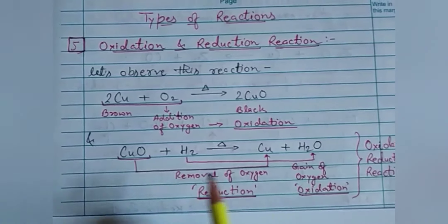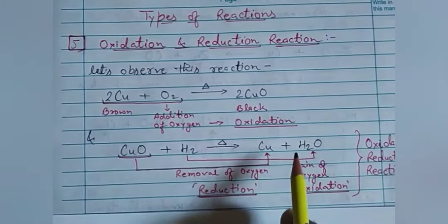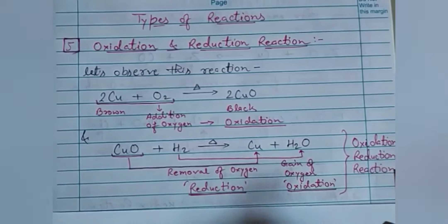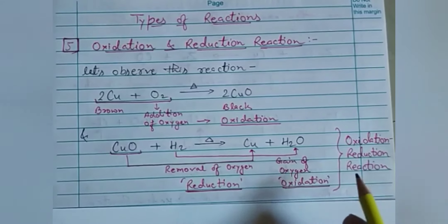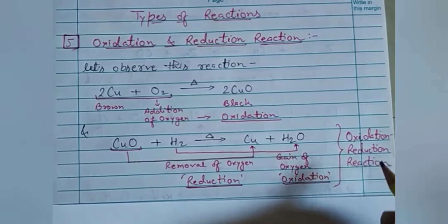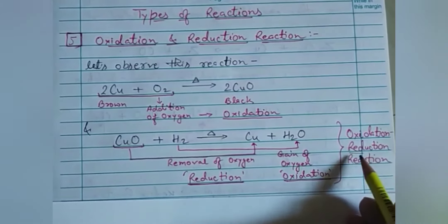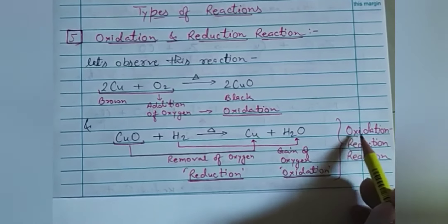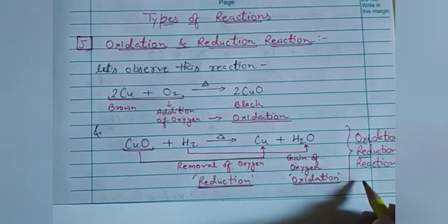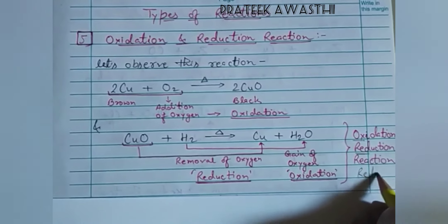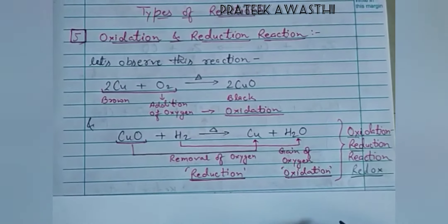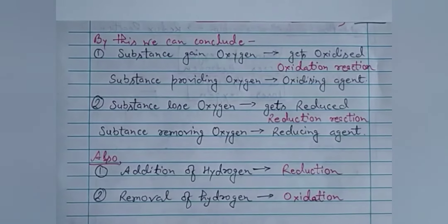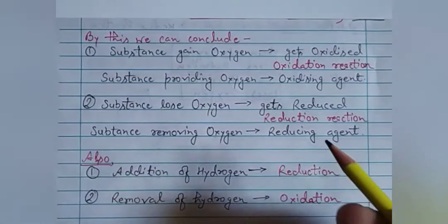In a reaction where we see both reduction and oxidation taking place, that type of reaction is called an oxidation-reduction reaction. In short, we take 'red' from reduction and 'ox' from oxidation, and by combining them we get the term redox reaction.